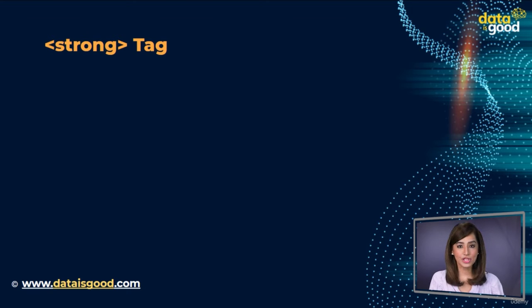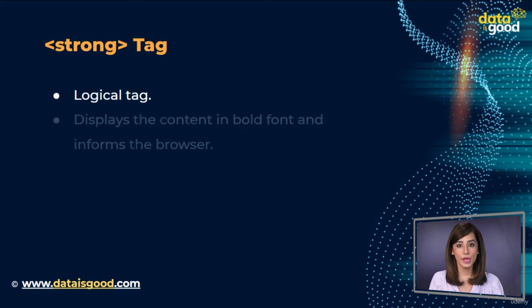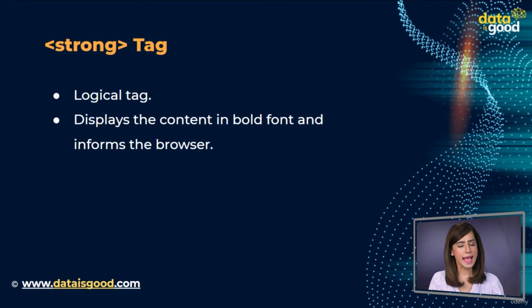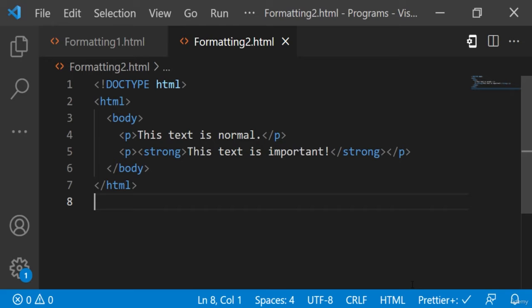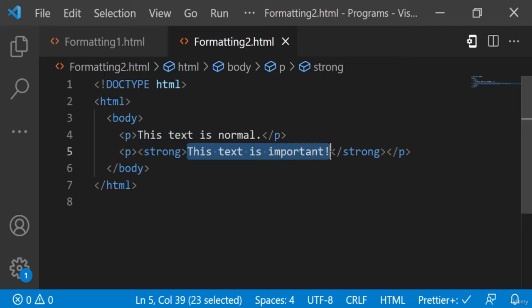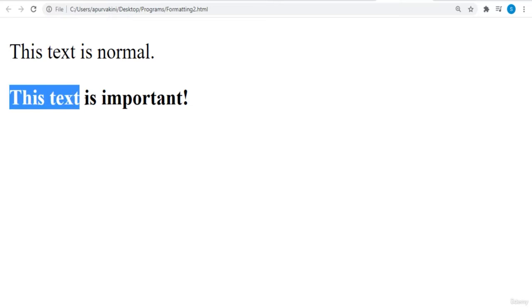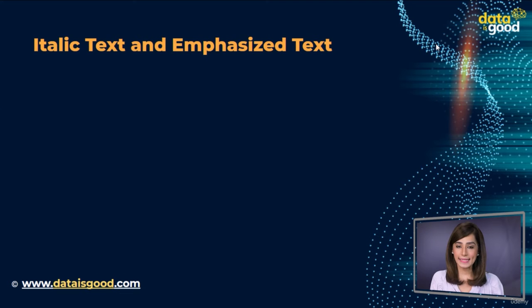Now let's move on to the strong tag. The HTML `<strong>` tag is a logical tag which displays the content in bold font and informs the browser about its logical importance. If you write anything between `<strong>` tags, it is shown as important text. Here's an example: we have written 'this text is important' in the `<strong>` tags. Let's see the output — the required text is displayed in bold as important text.